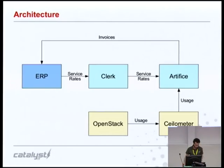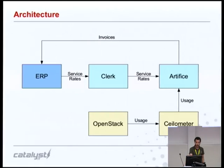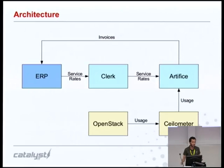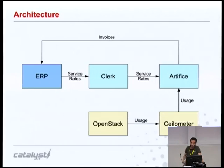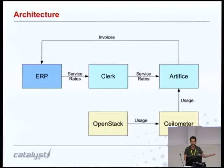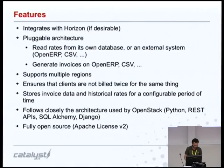Here is a 10,000-foot view of the Artifice architecture. As you can see, it's very simple. We have a component called Clark, and what that component does is it reads service rates out of your ERP system, or any system you might have in place already in your company, and it can also read from CSV files. There is another component, Artifice proper, which will pull the usage information from Ceilometer, combine both things, and generate the invoice back into your ERP system or whatever system you're using to invoice clients currently.